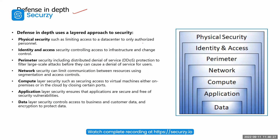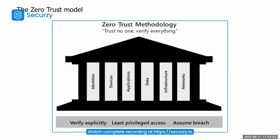Next, we have defense in depth. The defense in depth approach is really important — it is a layered approach in the security domain. If one layer doesn't work, a second layer will definitely protect your organization's data and information. In Microsoft's perspective, there are seven total layers: physical security, identity and access, perimeter, network, compute, application, and data. There is also the zero trust model followed by Microsoft.